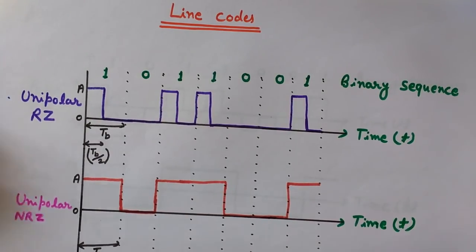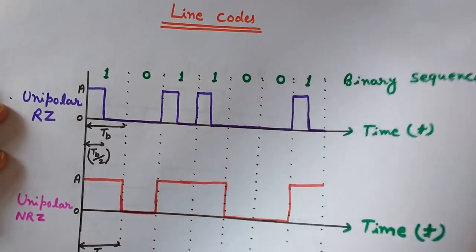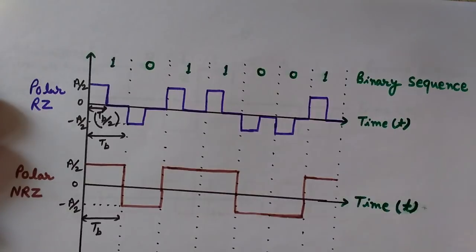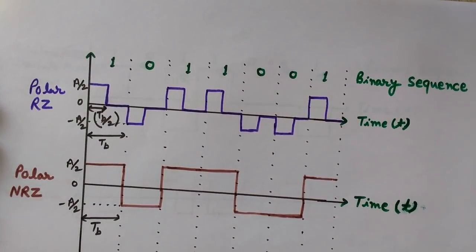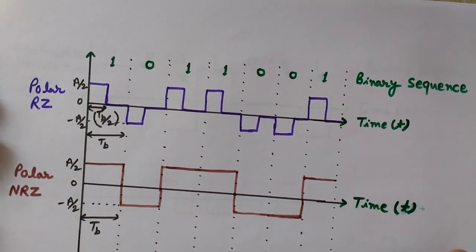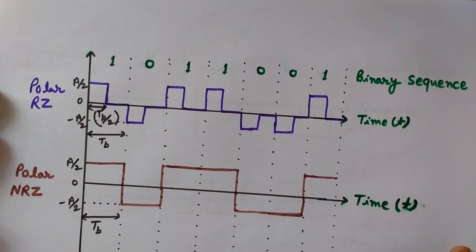Since these are unipolar formats, they have some average DC value. This DC value does not contain any useful information. The reason unipolar formats have a DC value is that everything is above the x-axis — there is no negative part to cancel it out. So there is always a DC component present.